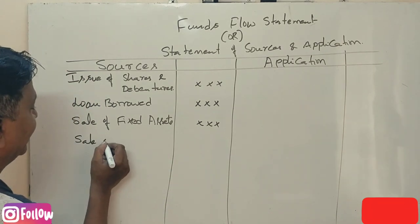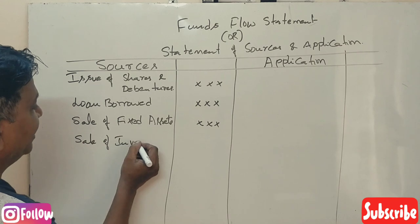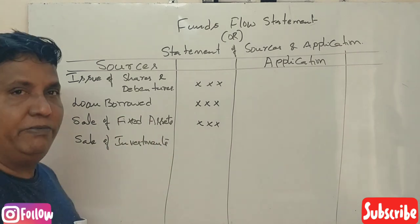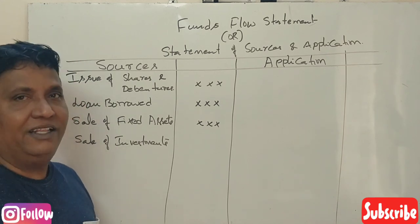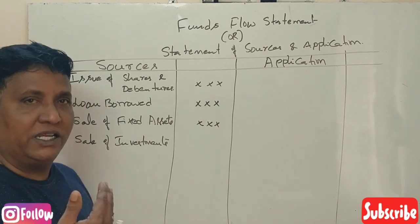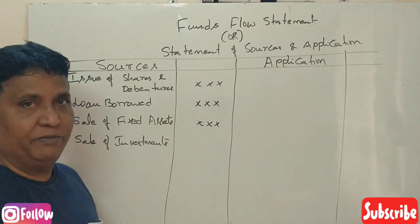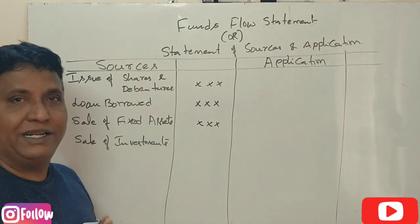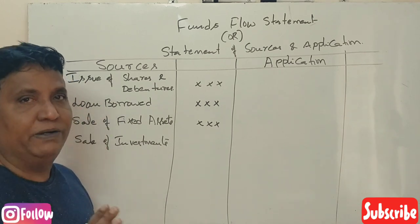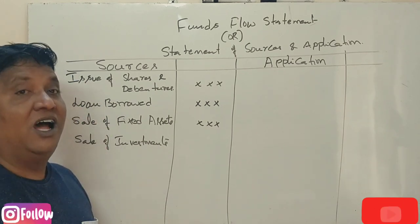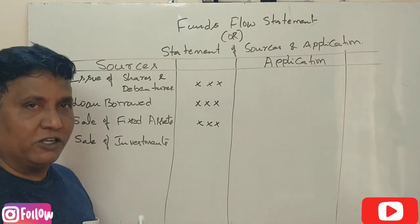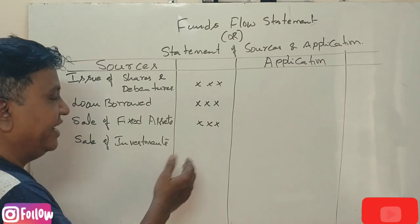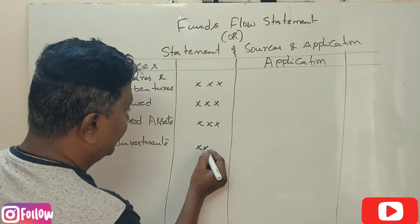The next source of funds is the sale of investments. Investments are different from fixed assets. These include both long-term investments and short-term investments. When these investments are sold, it becomes a source of funds.